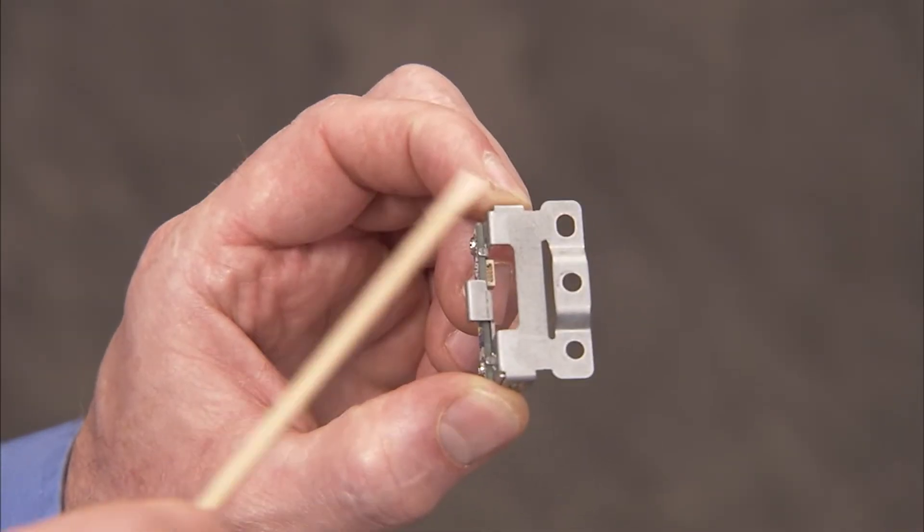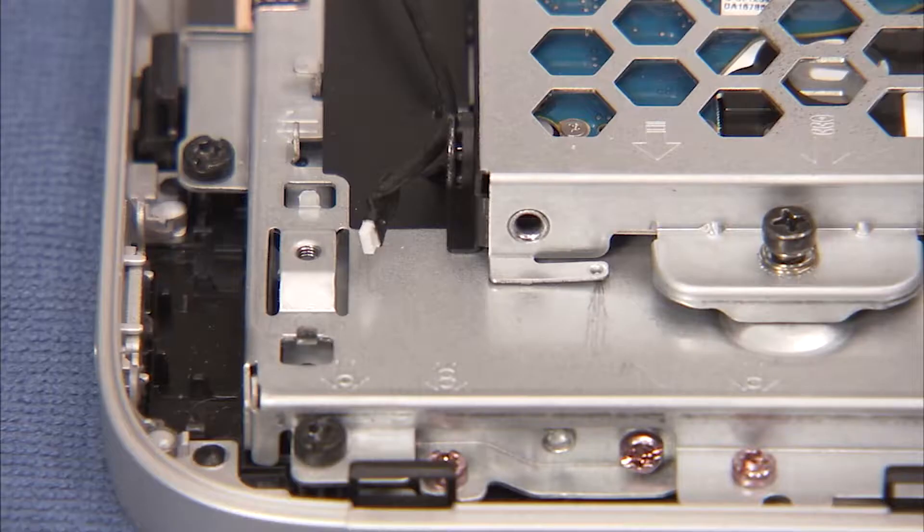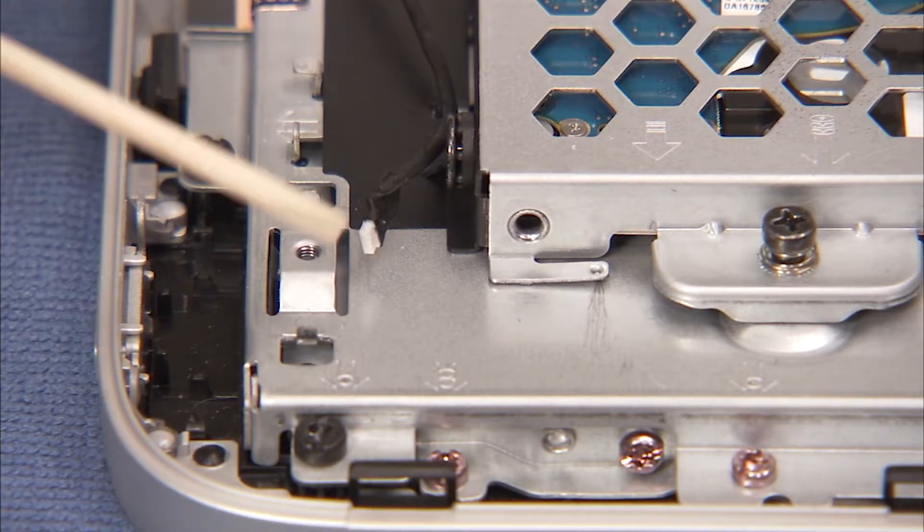The power button bracket has two small holes on the bottom that fit over two small metal tabs on the middle frame.